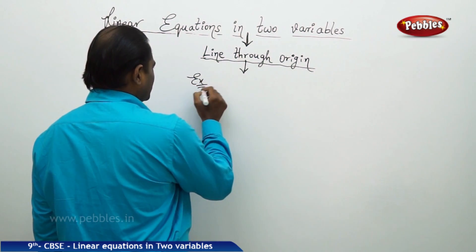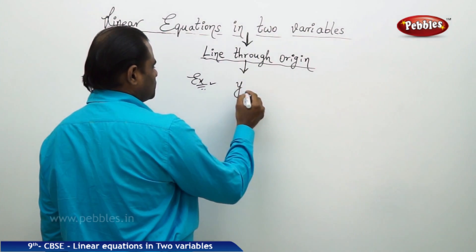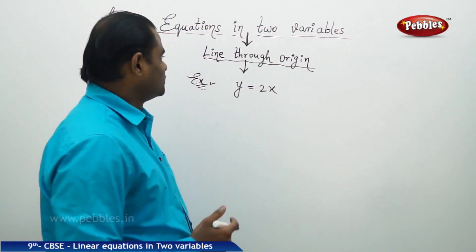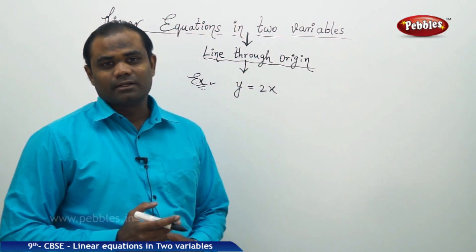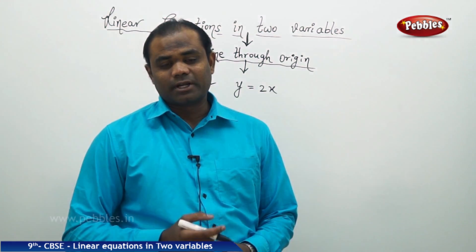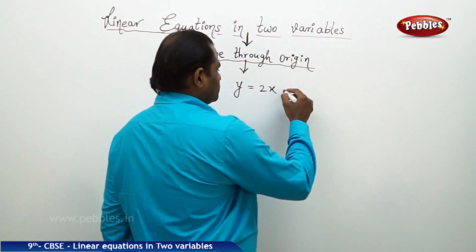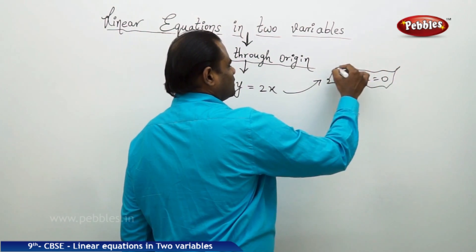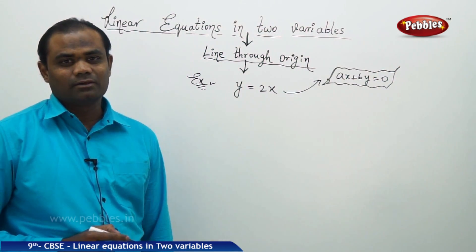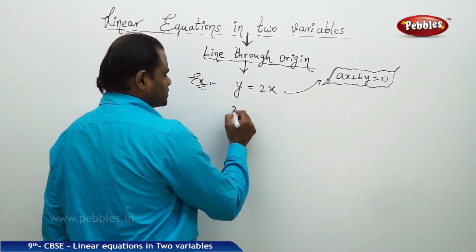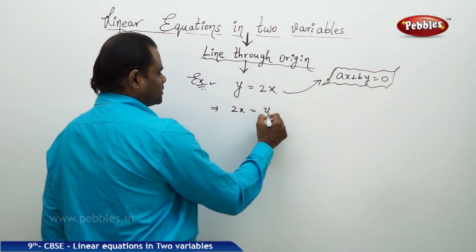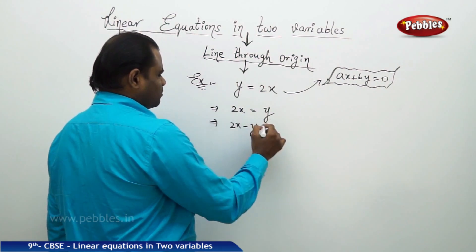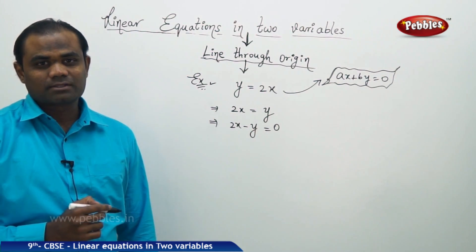For example, when I want to identify a line passing through origin, suppose I have y equals 2x. This is in the form ax plus by. To identify whether this line passes through origin, I first try to reduce it into the general form. A line passing through origin must satisfy ax plus by equals 0. Therefore, y equals 2x implies 2x equals y.